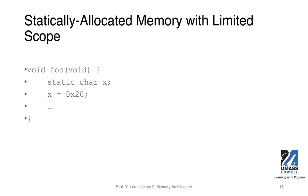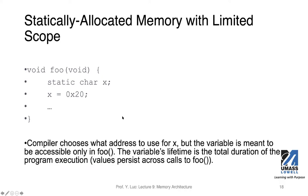We can also statically allocate memory for a variable with limited scope. Inside a function, if you declare a variable with the keyword static — for example, static char x — the static keyword ensures this variable is allocated in statically allocated memory even though it's declared inside a function. Its value is retained even after the function exits. The compiler chooses the address, but the variable is accessible only within that function, and its lifetime is the total duration of the program.